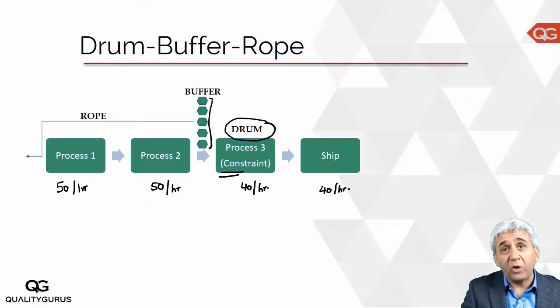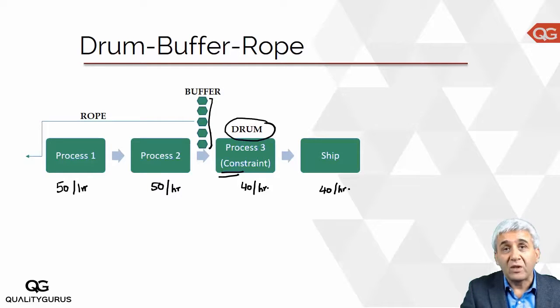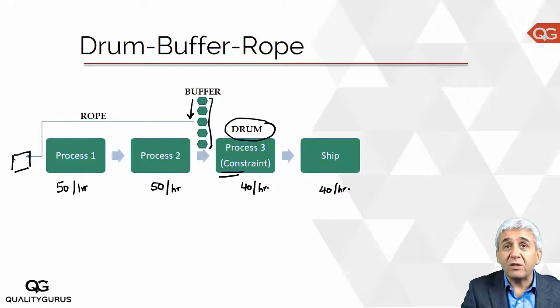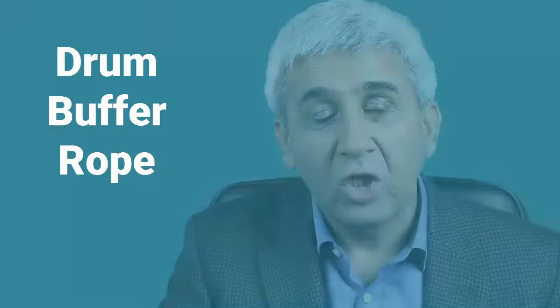Suppose there is some stoppage of work in processes one and two, and the buffer keeps reducing. In this picture, for example, there are five pieces in the buffer. If the buffer goes down to three pieces, there is a mechanism that sends a signal to the front of the chain to release more material — warning that the constraint will soon suffer from shortage. That signal is the rope. This completes our discussion on theory of constraints.